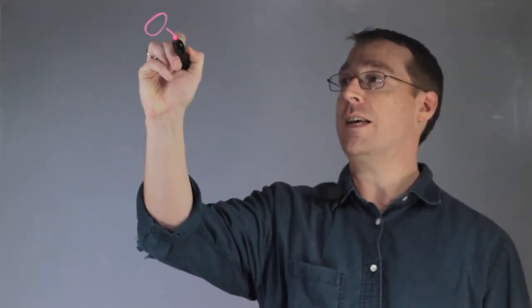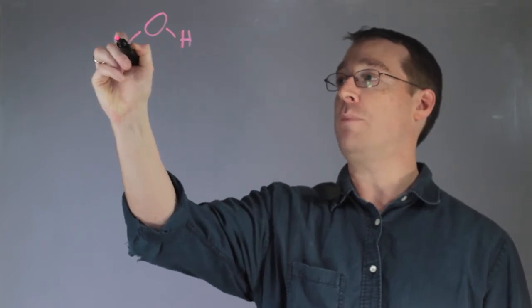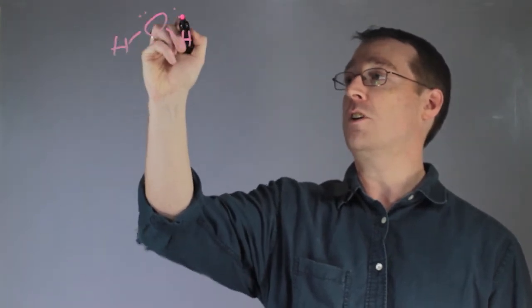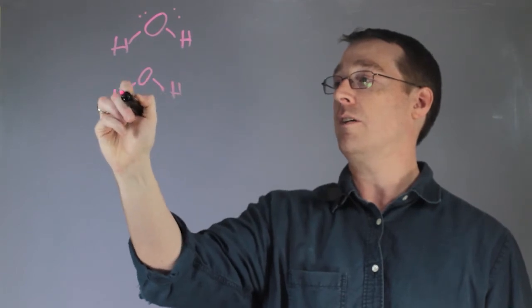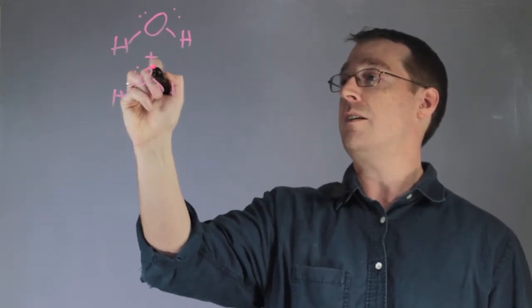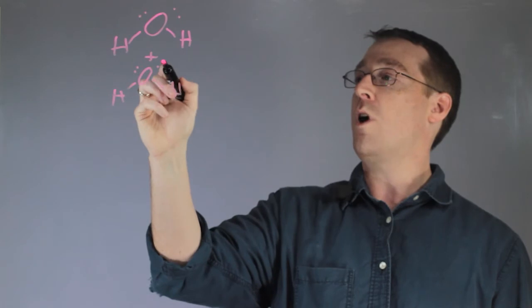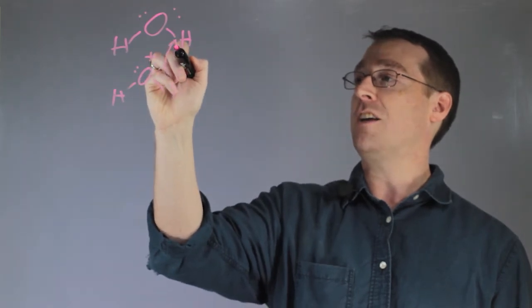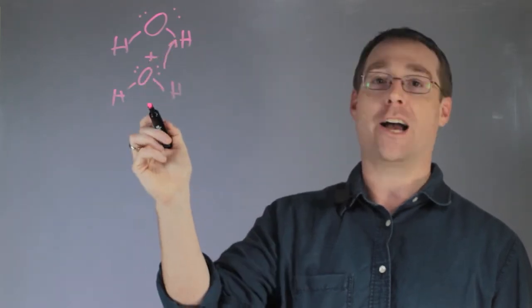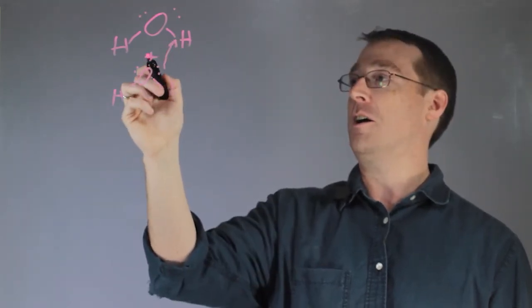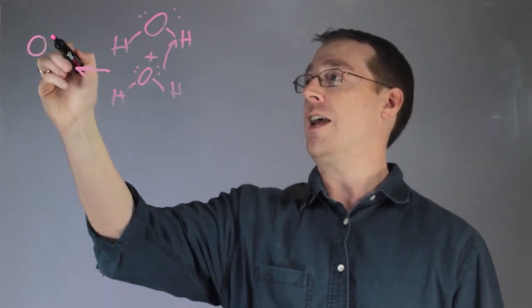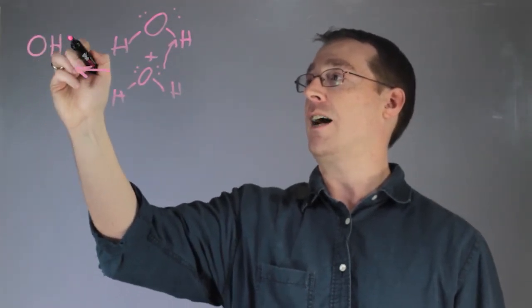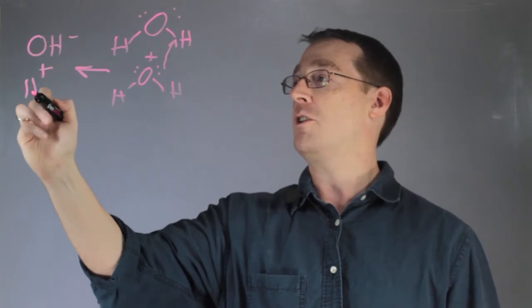Now water is an interesting molecule in that it can act both as an acid and a base. If we look at two water molecules here, we see that one water molecule can essentially pluck a hydrogen from another water molecule, thus generating a hydroxide ion and a hydronium ion.